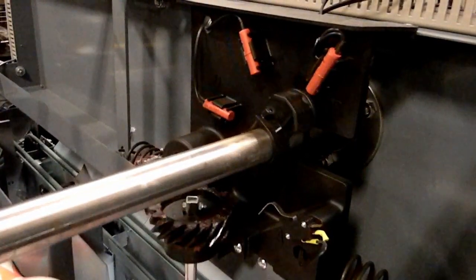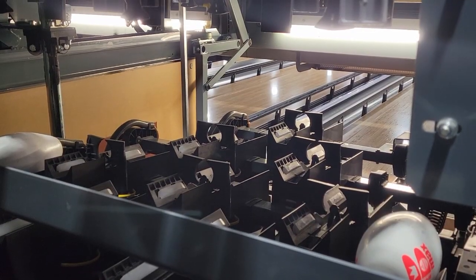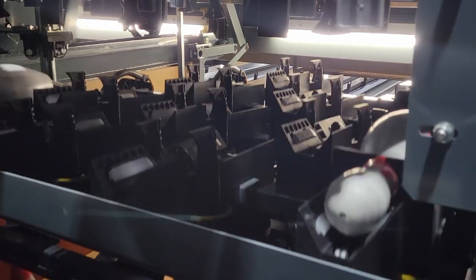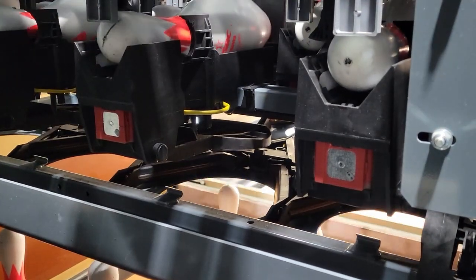At switch B the pin holder gripper solenoid will energize to load any available pins from the distributor when the setting table returns home.